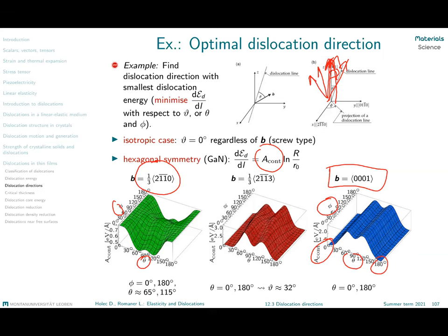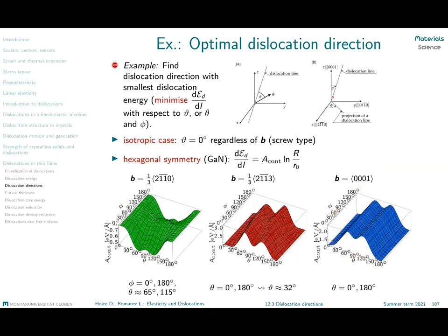Now let's look at the more complicated case that actually negates what is normally assumed as generally true — and that is the A type dislocation. First, we get a dependence on the angle phi. That makes perfect sense: our Burgers vector is along the A axis, and of course if I have the dislocation line direction 90 degrees away — edge type dislocation — but the dislocation line is along the C axis or along the 1 0 1-bar 0 axis, also 90 degrees, the behavior is expected to be very different.